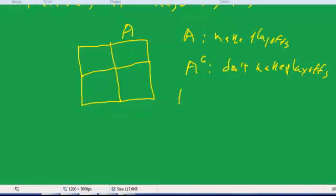And then we had B, coach is fired. So I'm going to put, by the way, I'll take this AC and I'll put it right here next to A. And I'll put B here. And I'll put BC here. The complement of B is that the coach is not fired.